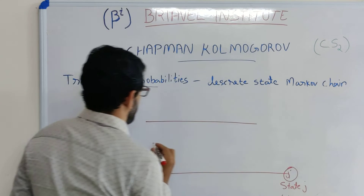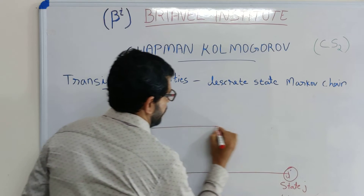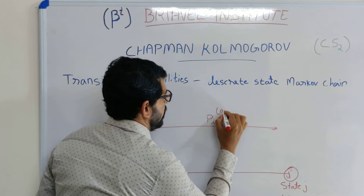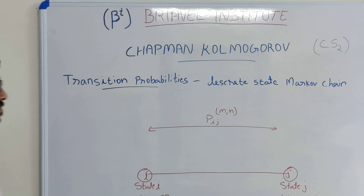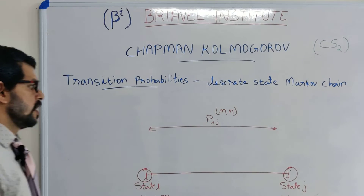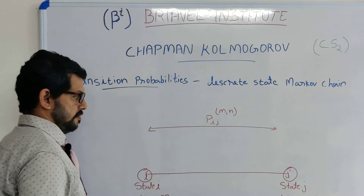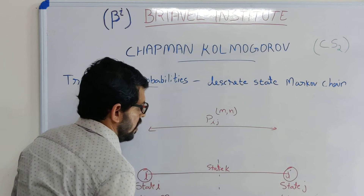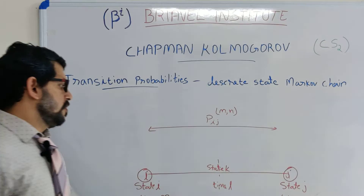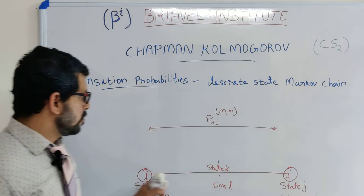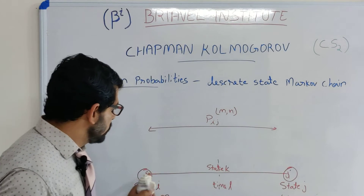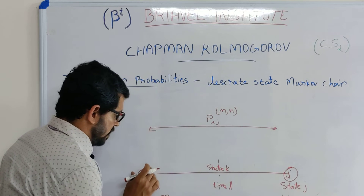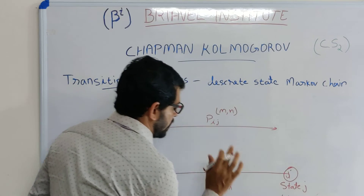How do we write this transition probability? It is written as P of IJ at time m comma n, meaning P(I,J; m,n). In this equation we consider one intermediate state K at time L. So the path goes from state I, passing through intermediate state K at time L, and then reaching state J.